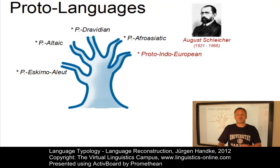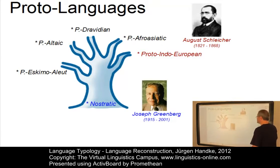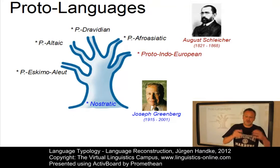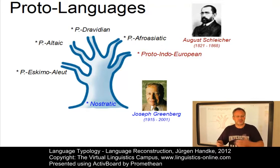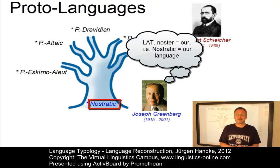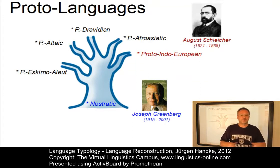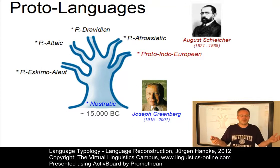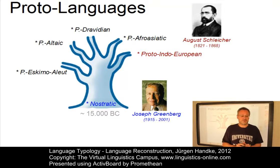Some linguists, among them Joseph Greenberg and a number of Russian linguists, discerned similarities among these proto-languages, such as Indo-European, Afro-Asiatic and others, and postulated a common ancestor to all these languages, which he called Nostratic. The Nostratic hunter-gatherers would have occupied all of Europe, northern Africa and large parts of Asia from an origin in the Middle East, perhaps around 15,000 years before Christ. Yet, all this is still very speculative.